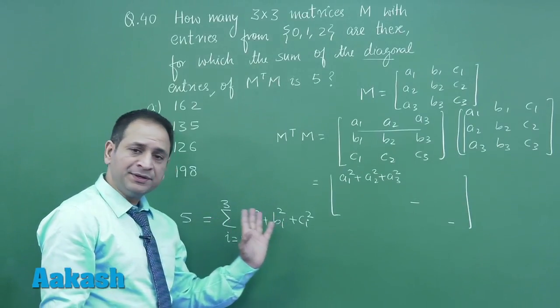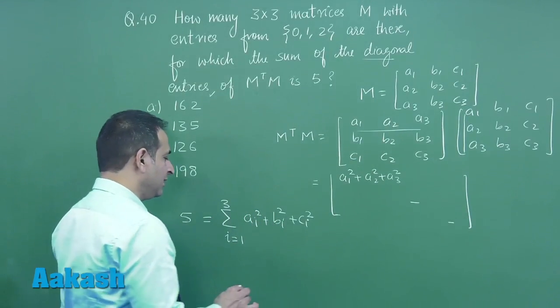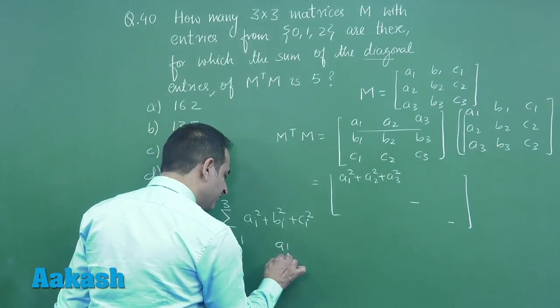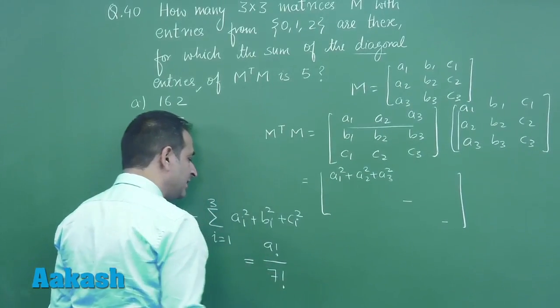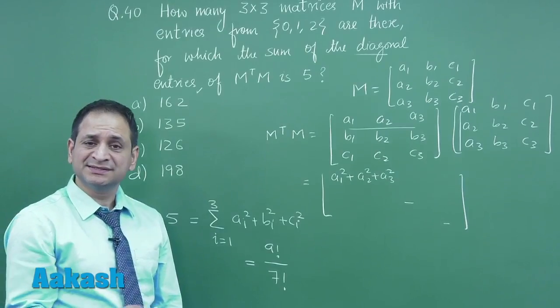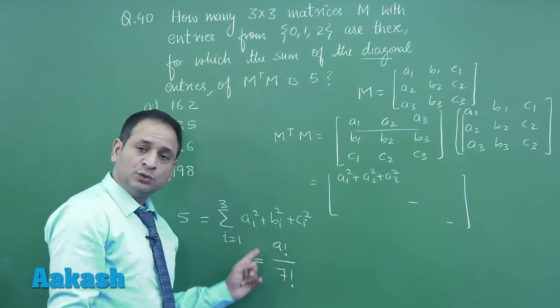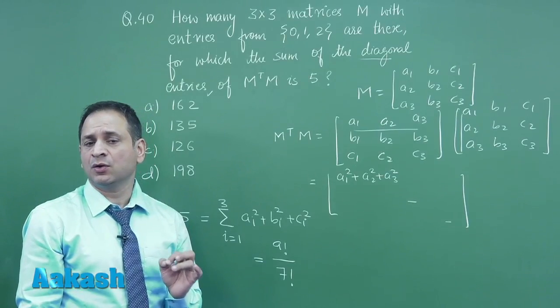This possibility will come in these 9 digits. So definitely the number of ways is 9 factorial upon factorial 7. Please understand, because there are 7 zeros, so they are similar. So this is the total number of cases when 1 is 2, other is 1, and all rest are 0.